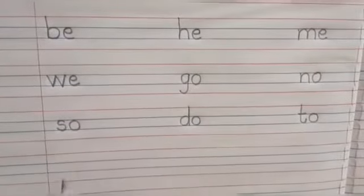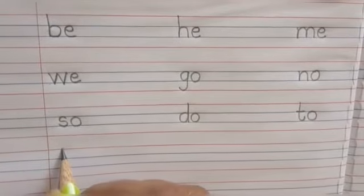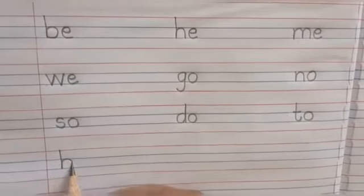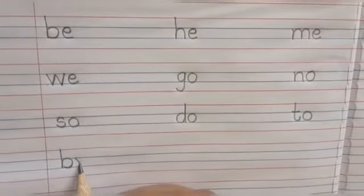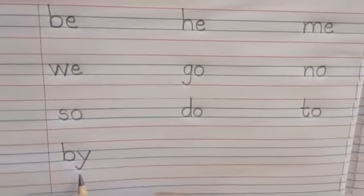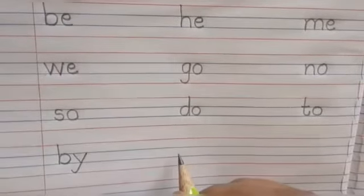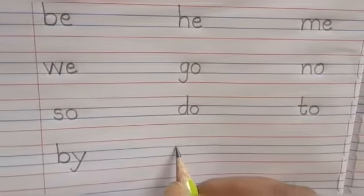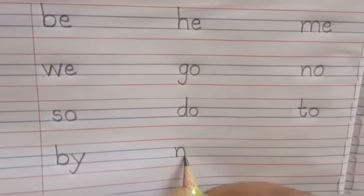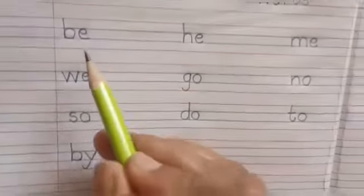Now below 'so' you will write 'by' — small b, small y. Again, y you have to touch the bottom red line: by. And the last word is 'my' — small m, small y.